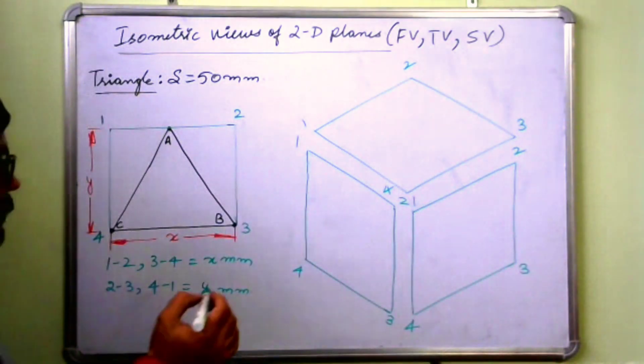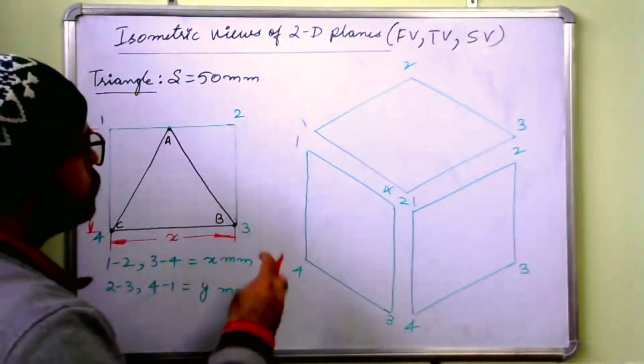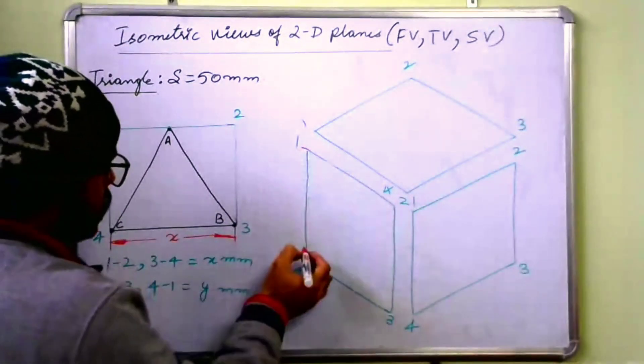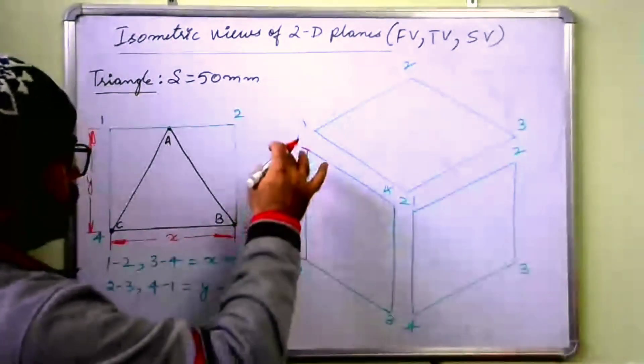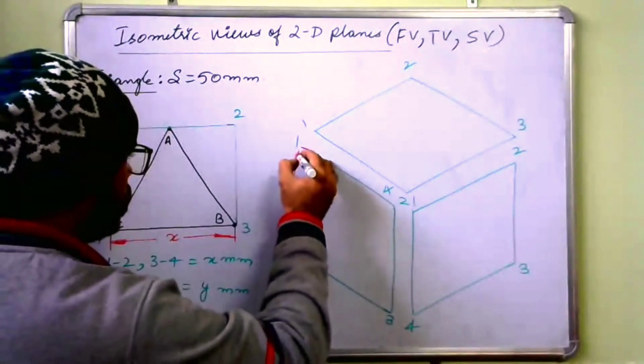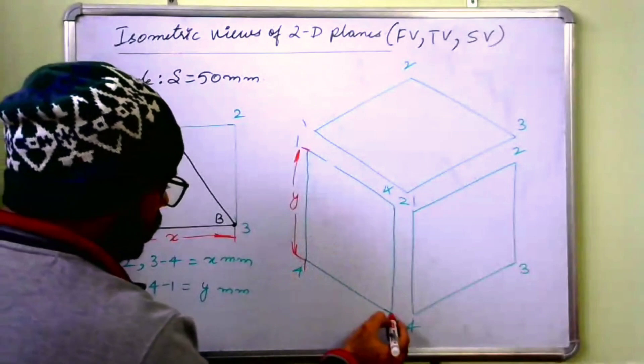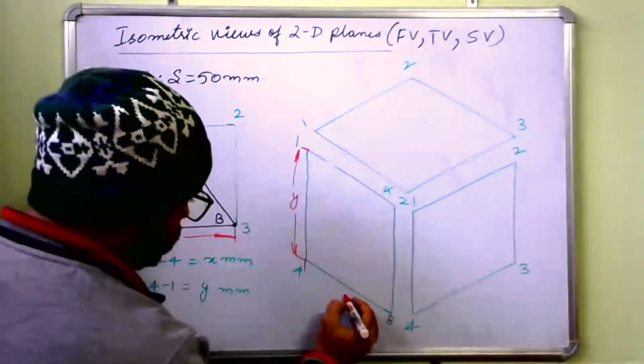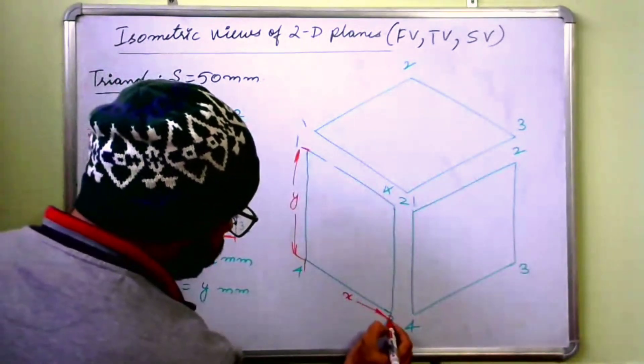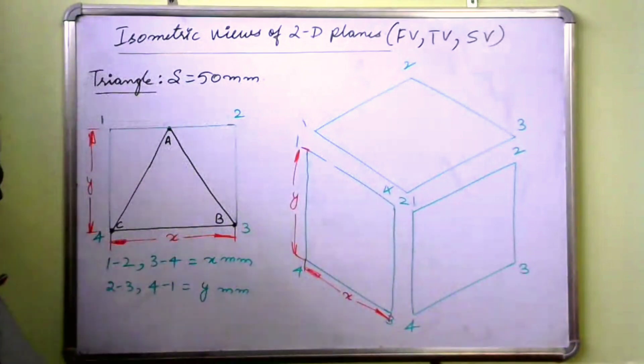So here, this will be equal to 1, 4 is equal to y. Let us say this is equal to y and this is equal to x.